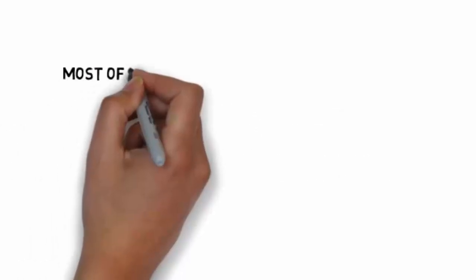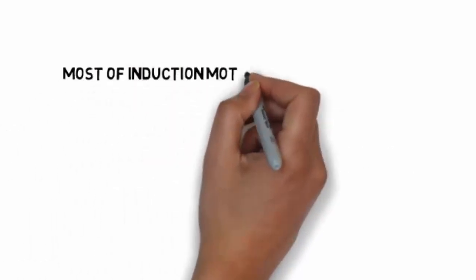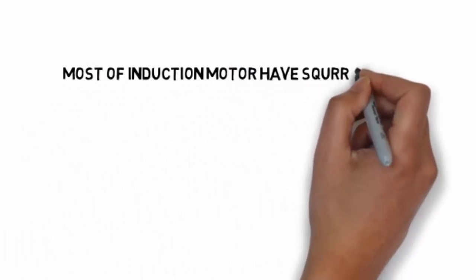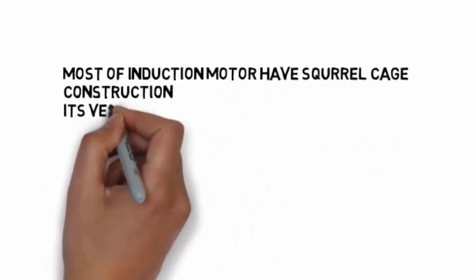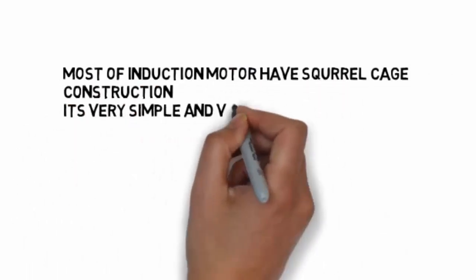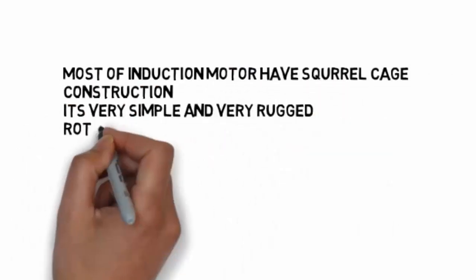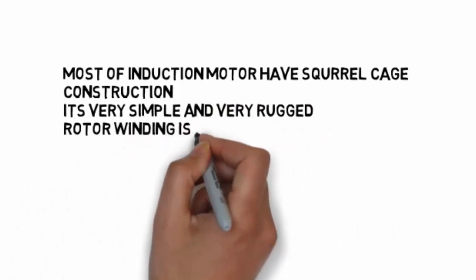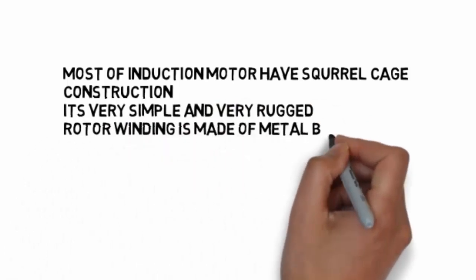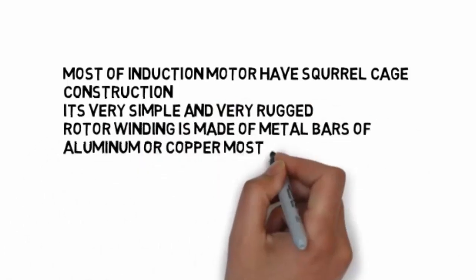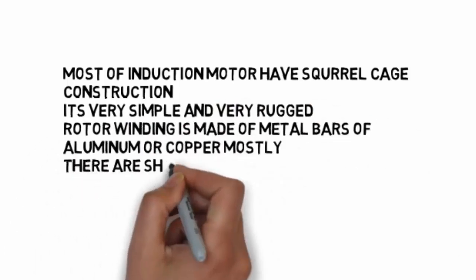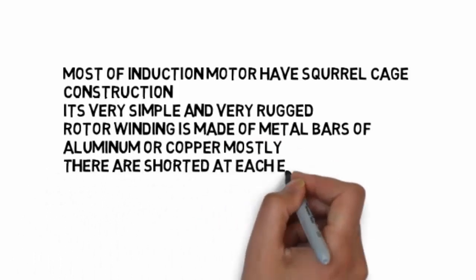Most induction motors are of squirrel cage construction. It is very simple and rugged — the rotor winding is made of metal bars of aluminium or copper.